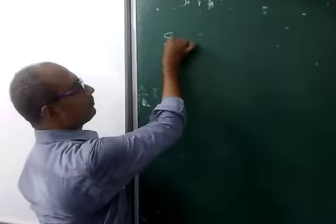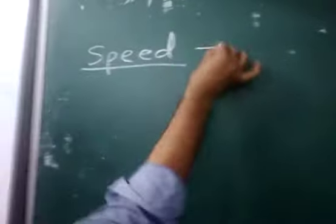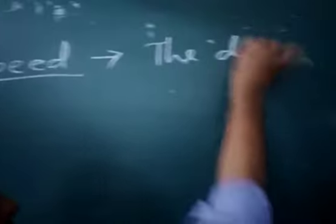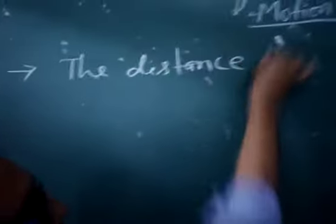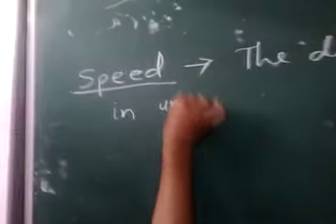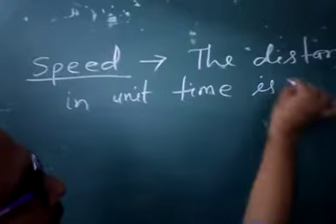Speed. The distance traveled by an object in unit time is called speed.